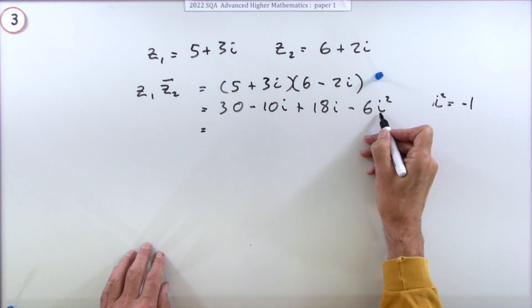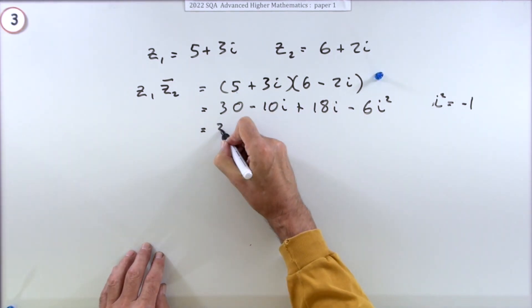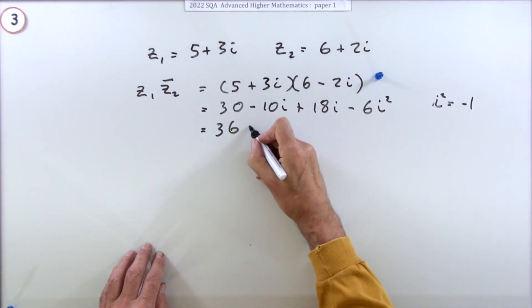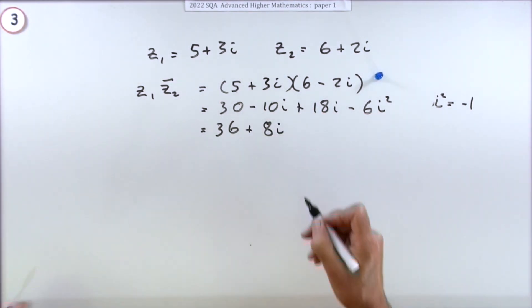So that means that's plus six, so I've got 36, and that's just going to give you 36 plus 8i. And that's really all there is to it.